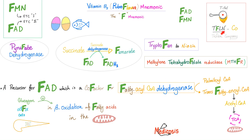Do not forget the Teflon mnemonic. Remember the five cofactors for many dehydrogenase enzymes such as pyruvate dehydrogenase? T is Thiamine, F is FAD which comes from riboflavin, L is lipoic acid, N is NAD which comes from niacin, and Co is CoA-SH. Vitamin B2 is a cofactor for pyruvate dehydrogenase as well as succinate dehydrogenase, which converts succinate to fumarate. For this, FAD becomes FADH2.